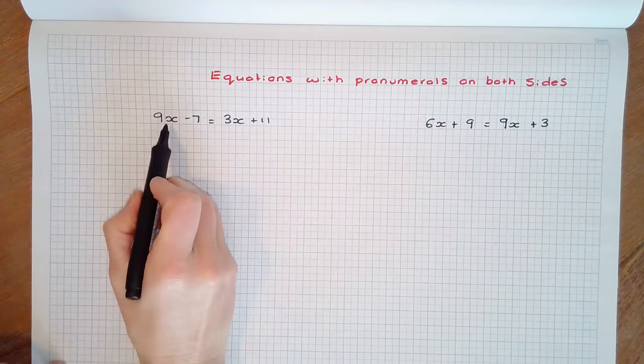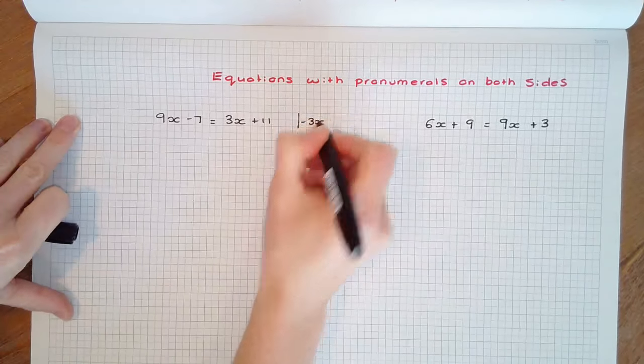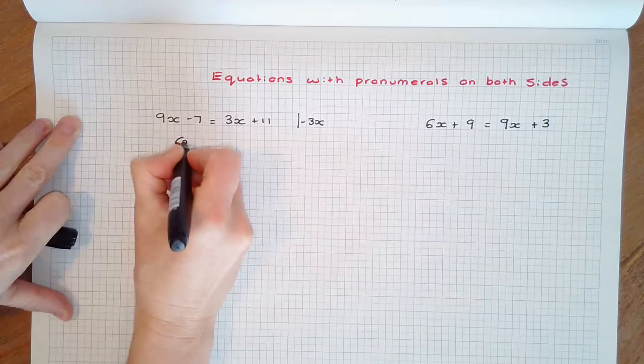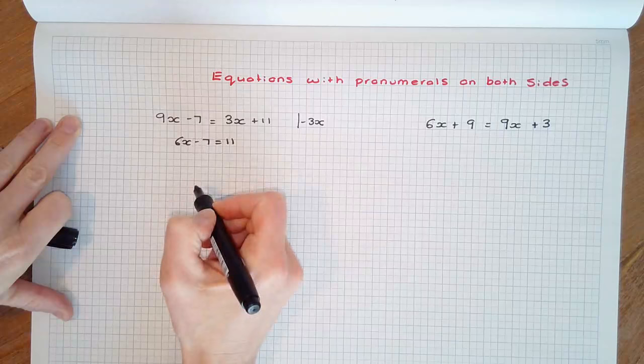Here, we have 9x on the left and 3x on the right. If we subtract 3x from both sides, we'll end up with 6x minus 7 equals 11. Now it's a normal two-step equation.